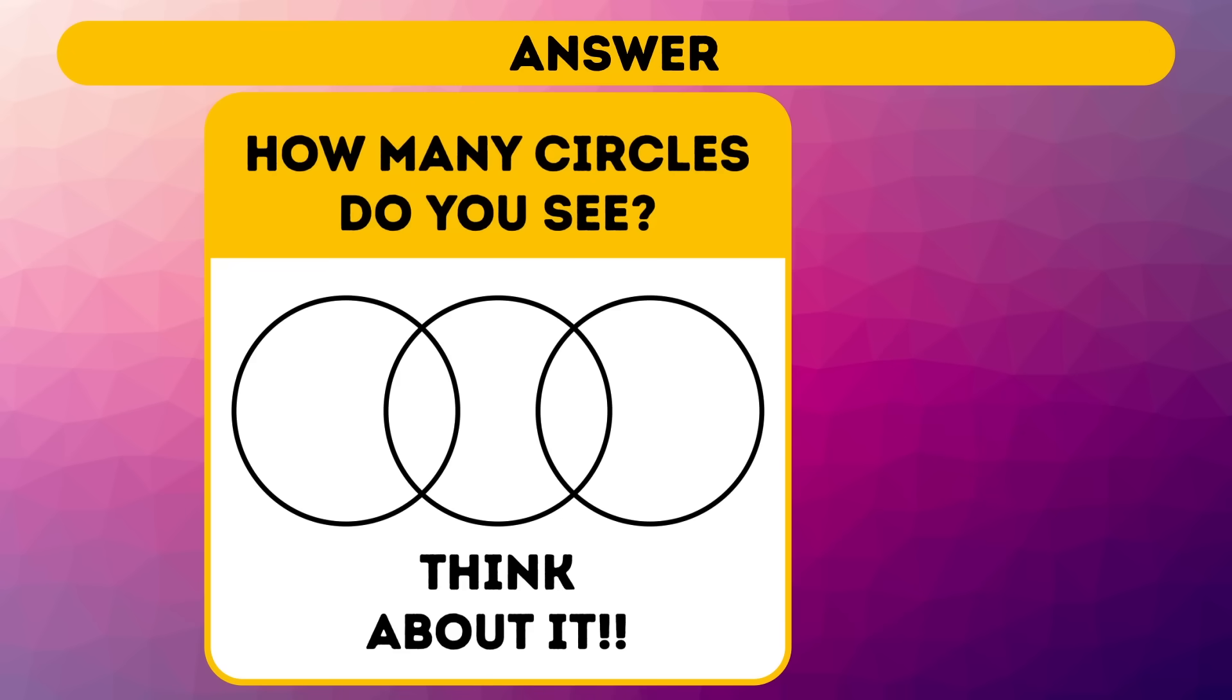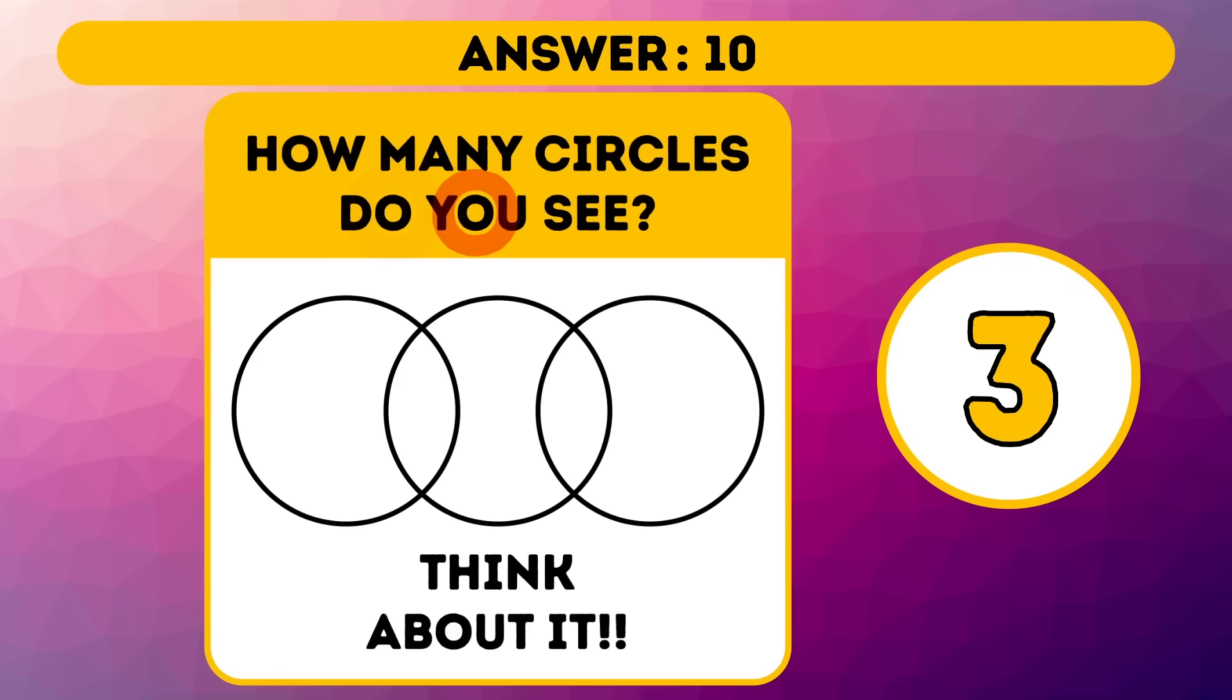The correct answer is 10. When I asked you to look for circles, I was talking about the whole image, text included. There are 4 O's in the question, in how, do, you, and about. No, we're not cheating! Then, there's a question mark and an exclamation mark, both of which have round dots in them. Add the 3 obvious circles, and you get 10.